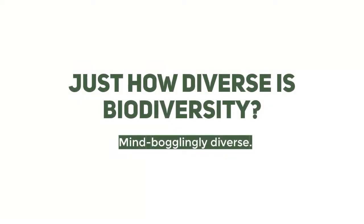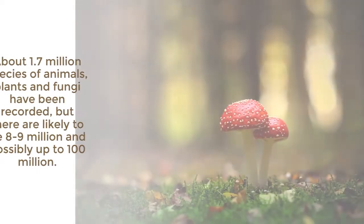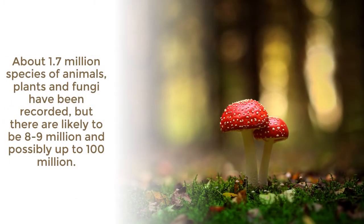Just how diverse is biodiversity? Mind-bogglingly diverse. The simplest aspect to consider is species. About 1.7 million species of animals, plants and fungi have been recorded, but there are likely to be 8–9 million, and possibly up to 100 million. The heartland of biodiversity is the tropics, which teems with species. In 15 hectares of Borneo forest, for example, there are 700 species of tree — the same number as the whole of North America.